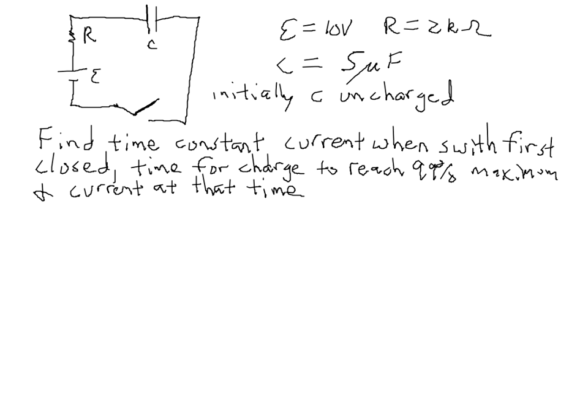This is an example problem dealing with the charging of an RC circuit. In this problem, we have a 10 volt battery wired in series with a 2 kiloohm resistor R and a 5 microfarad capacitor C. They're also wired in series with a switch, which currently is open, and we're told that initially the capacitor is uncharged.